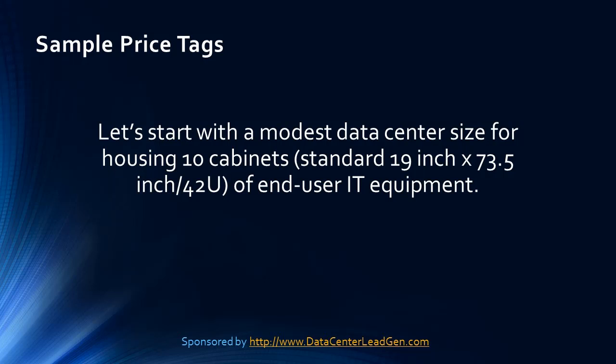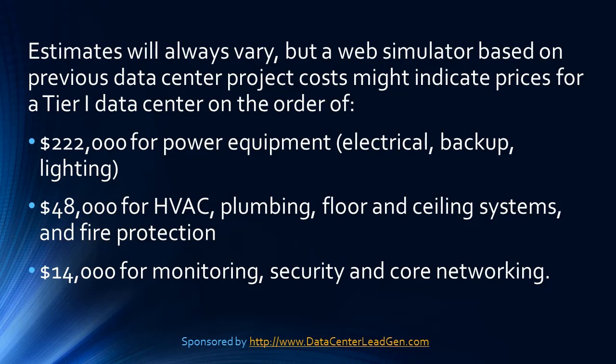Sample price tags: let's start with a modest data center sized for housing 10 cabinets — standard 19-inch by 73.5-inch, 42U of end-user IT equipment. Estimates will vary, but a web simulator based on previous data center project costs might indicate prices for a Tier 1 data center on the order of $222,000 for power equipment, electrical backup lighting; $48,000 for HVAC, plumbing, floor and ceiling systems, and fire protection.